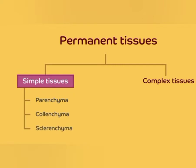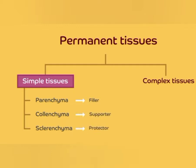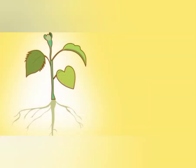Parenchyma is the type of supportive tissue which fills the entire plant, so it is called a filler tissue. Colenchyma offers structural support to the plant, so you can call it a supporter. Sclerenchyma contains dead cells and protects the plant from external influence.